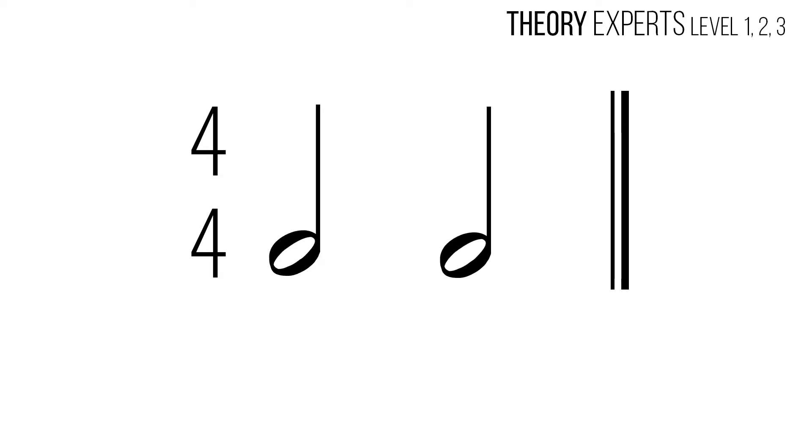Because a half note takes up two counts, we need to understand which beats of the measure it takes up. The first half note occurs during beats one and two, and the second half note occurs during beats three and four. We use a large number to show the start of the note, and a smaller number to show other beats during the note.